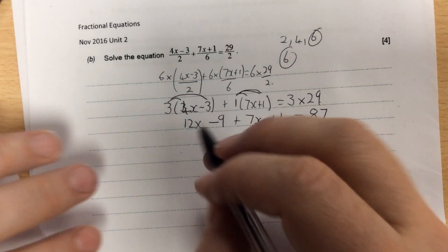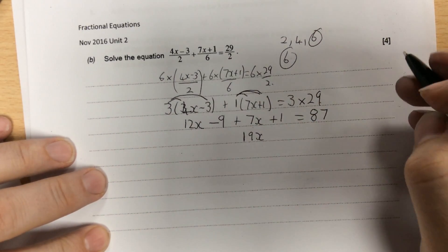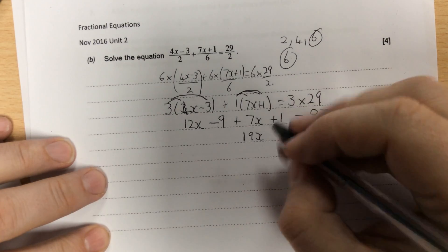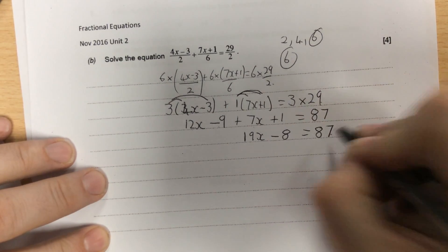When I collect these terms together now, 12x adds 7x is 19x. Minus 9 add 1 is minus 8, and that's equal to 87.